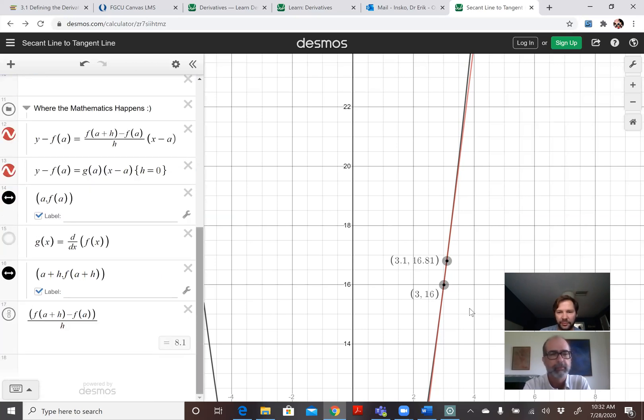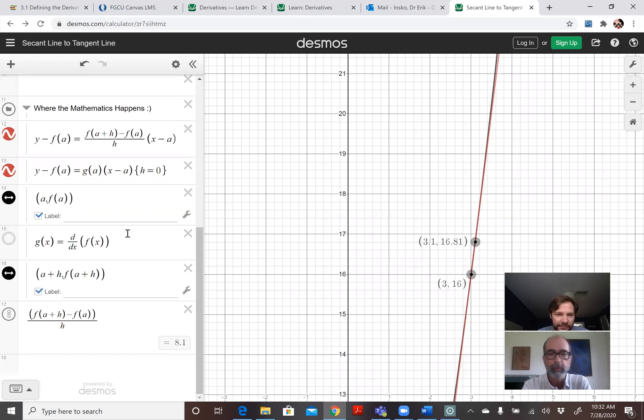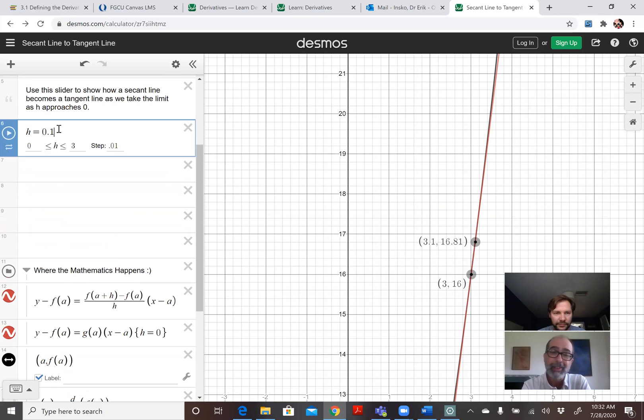So what do you think the slope actually is at (3, 16)? Well, it went from 8.5 to 8.25 to 8.1. If I had to guess, it seems like it would be 8.